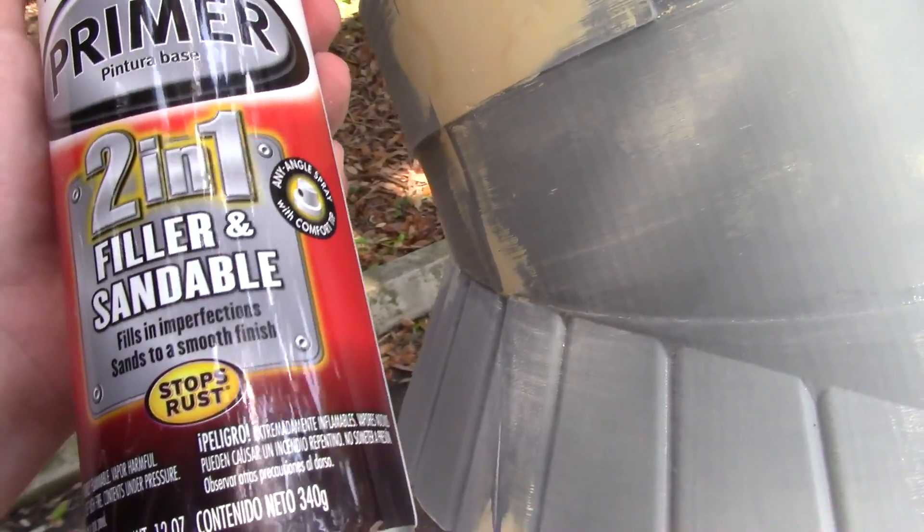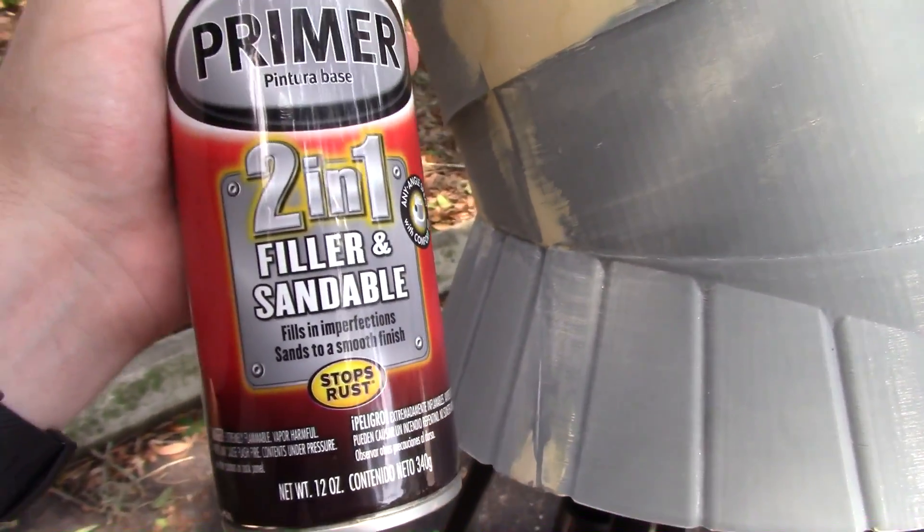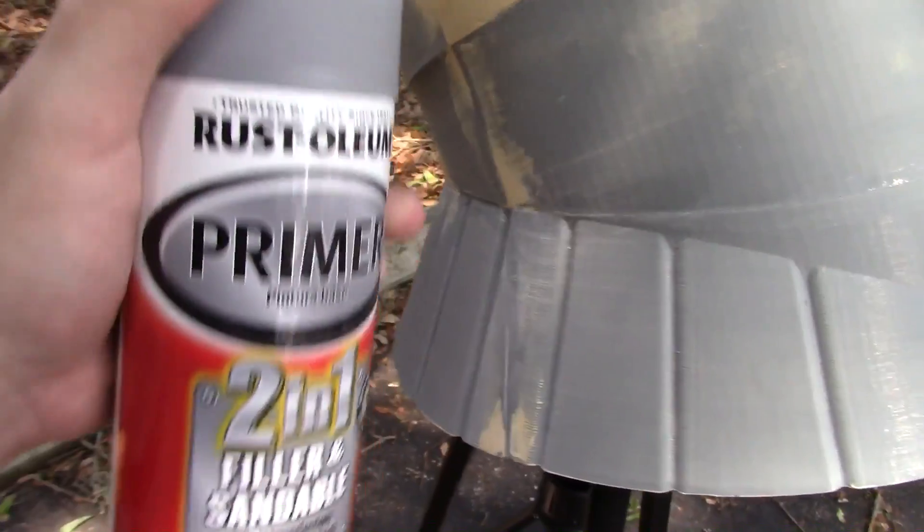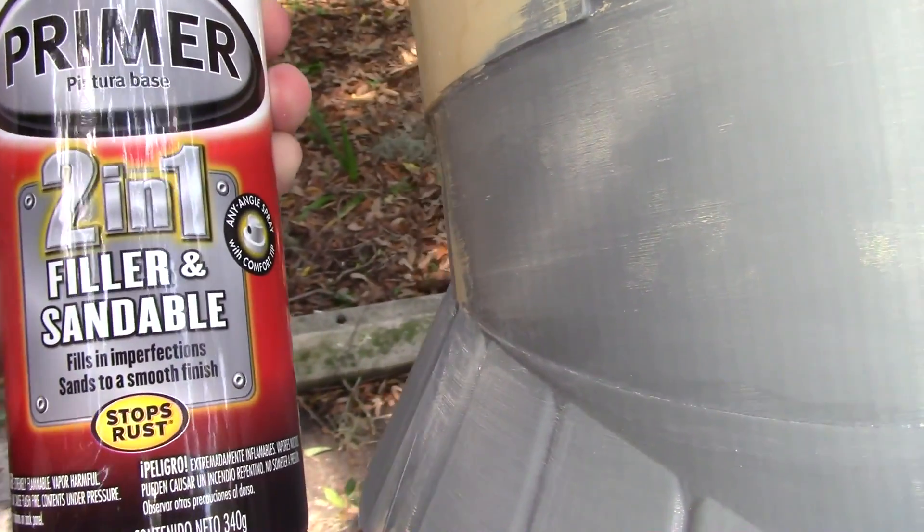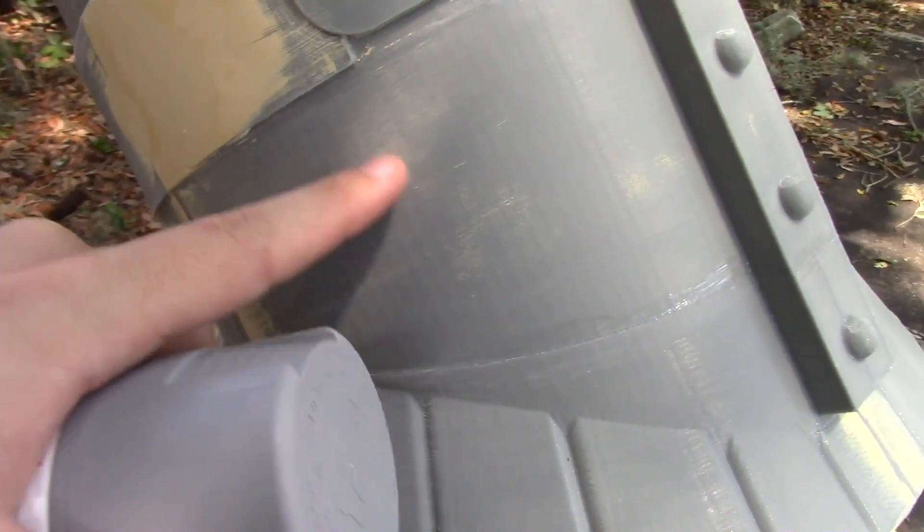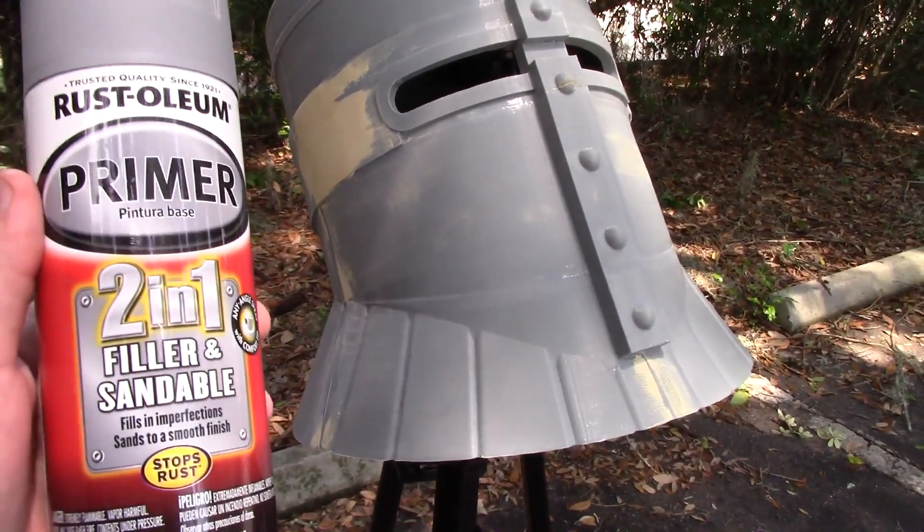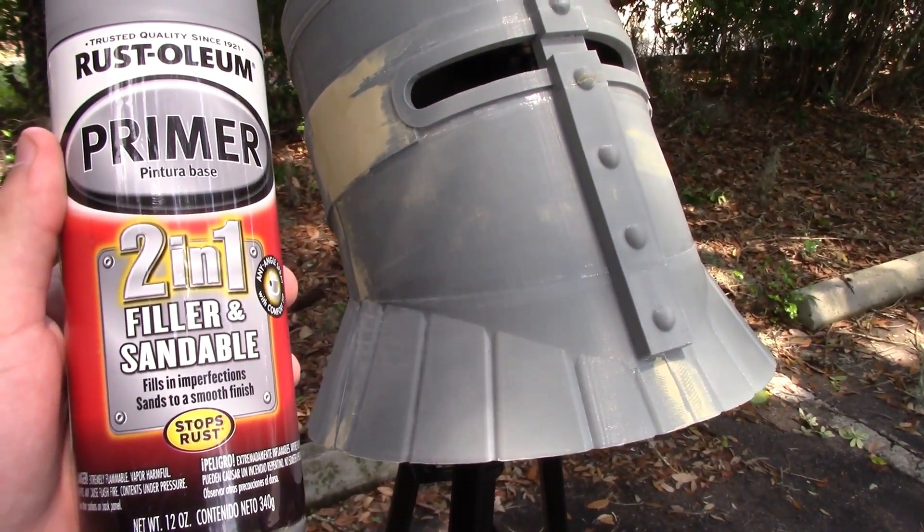So I'm going to try this filler primer and see if that would help hide most of the layers. I'd still have to sand the entire helmet, but primer is so much easier to sand than 3D printed material. So I'm hoping that this would leave a good enough surface so I can just give a very light sanding and continue on to a top coat. Let's get to it.